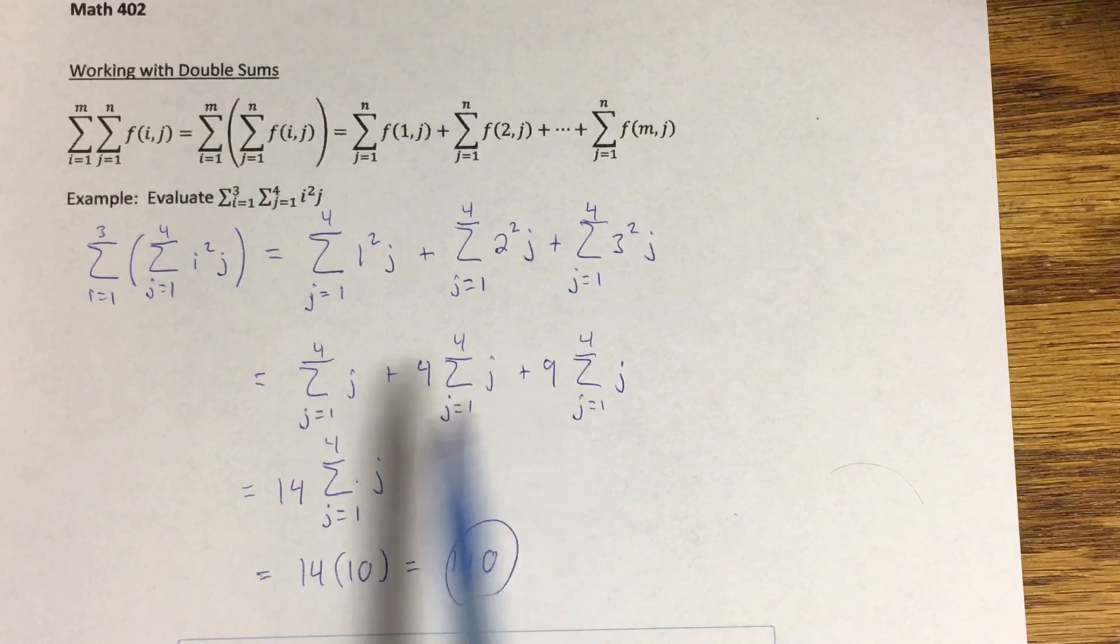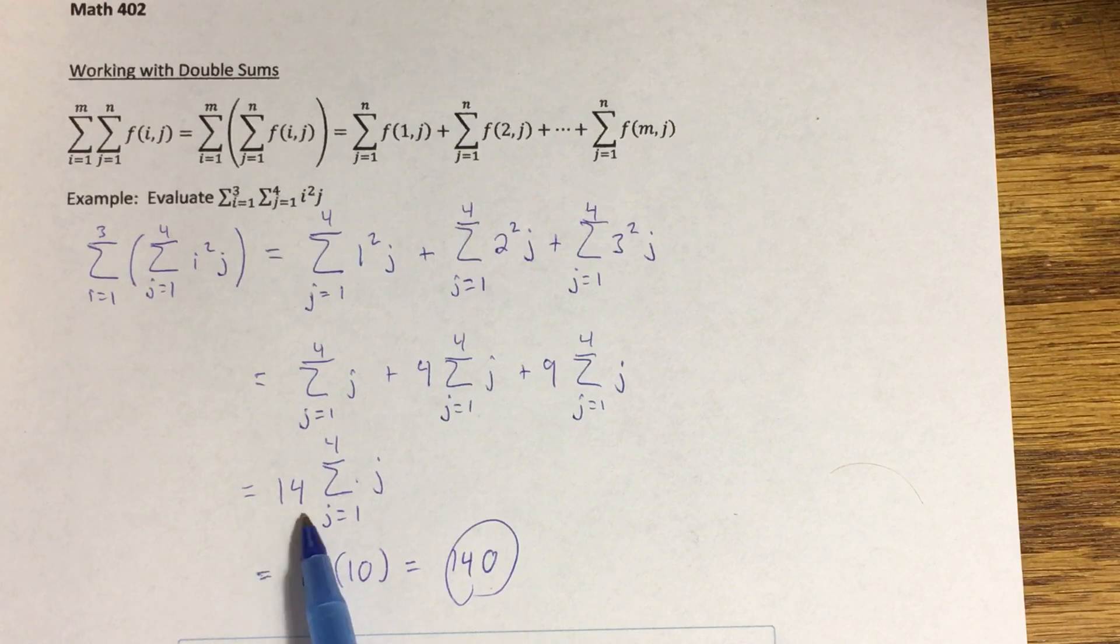So I can combine these three summations: one plus four plus nine, that's 14, and calculate this as 14 times the sum from one to four of just j. Now if you remember, this summation right here is literally just summing the numbers one plus two plus three plus four, which is 10, so this comes out to 14 times 10 or 140.